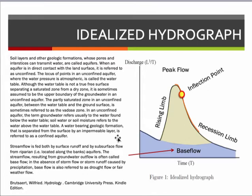Soil layers and geologic formations whose pores and interstices can transmit water are called aquifers. When an aquifer is in direct contact with the land surface, it's referred to as unconfined. The collection of points where water pressure is atmospheric is called the water table, which is sometimes assumed to be the upper boundary of groundwater. The partially saturated zone between the water table and the ground surface is called the vadose zone.